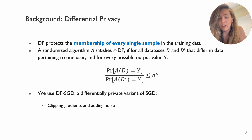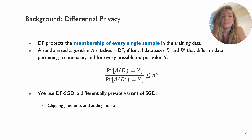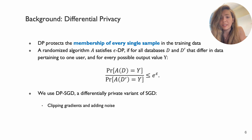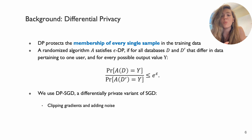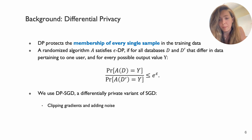I'm going to quickly go over some background, because the method we use to provide privacy relies on differential privacy. DP is a guarantee that protects the membership of every single sample in the training data. If you have two models trained on data that differs by only one record and you're doing it with differential privacy in mind, the two models are supposed to be very close to each other. We use DP-SGD, a differentially private variant of SGD, which entails clipping your gradients during training and adding noise to them.